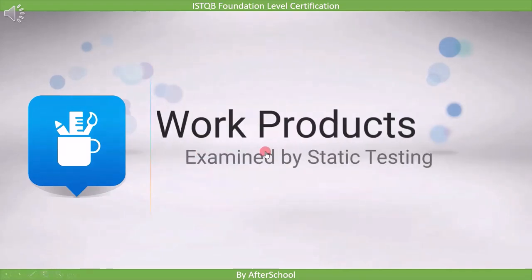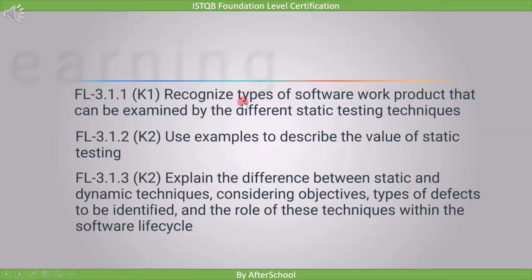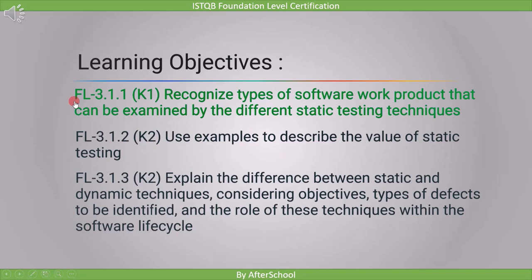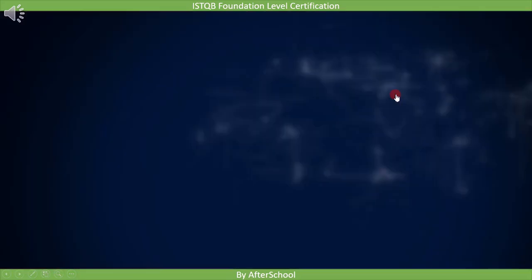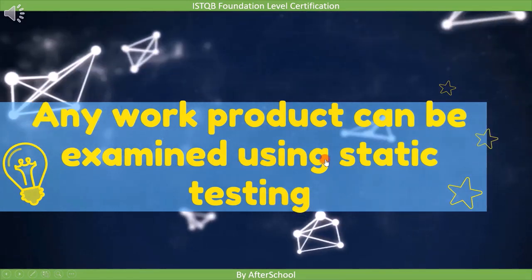In this lecture we will list all the work products which can be examined by static testing. This addresses the first learning objective: recognize types of software work products that can be examined by different static testing techniques. It is marked as K1, so you need to just remember the names of work products. Remember this: any work product can be examined using static testing.